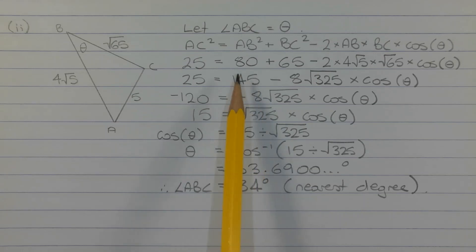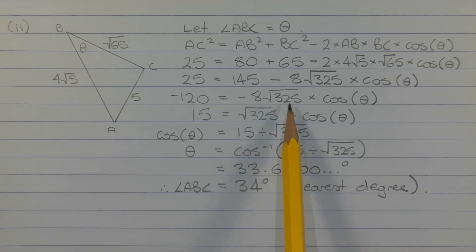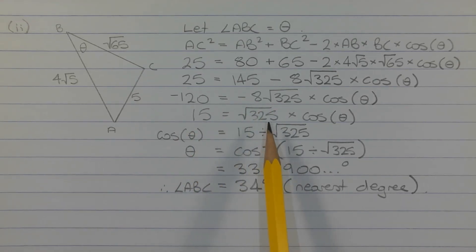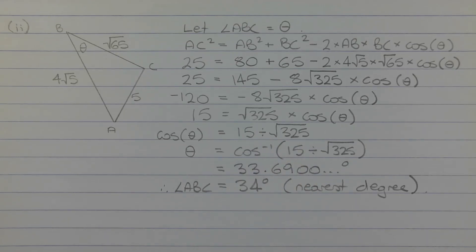Subtracting 145 from both sides gives negative 120 equals negative 8 root 325 times cos theta. Dividing both sides by negative 8 gives 15 equals root 325 times cos theta. Rearranging to make cos theta the subject, we get cos theta equals 15 divided by root 325.